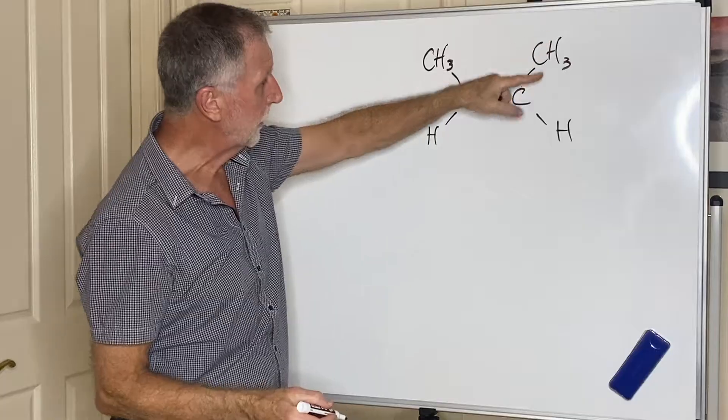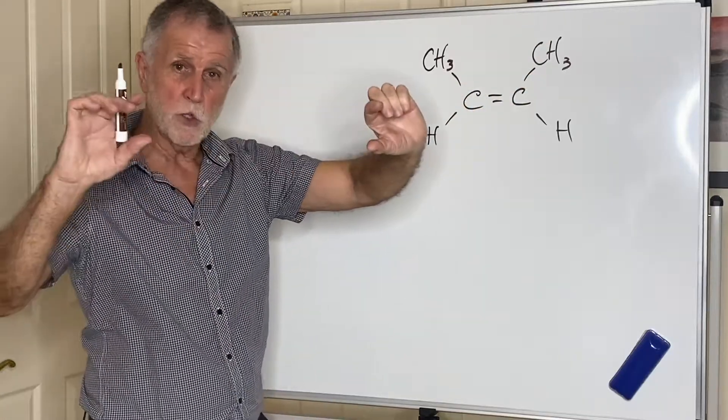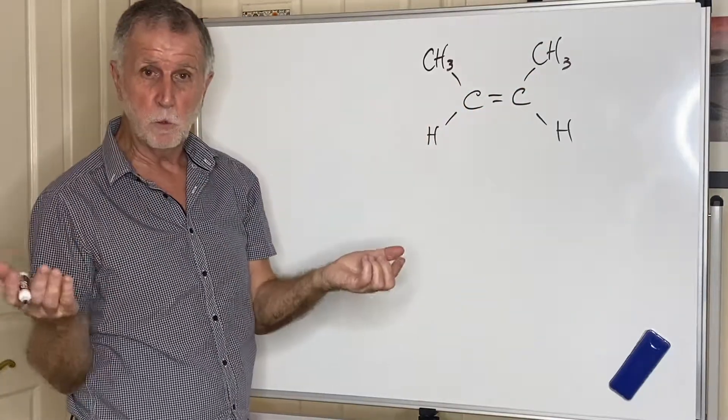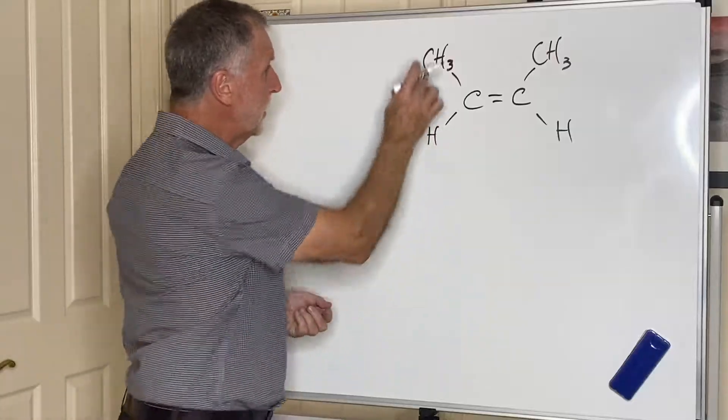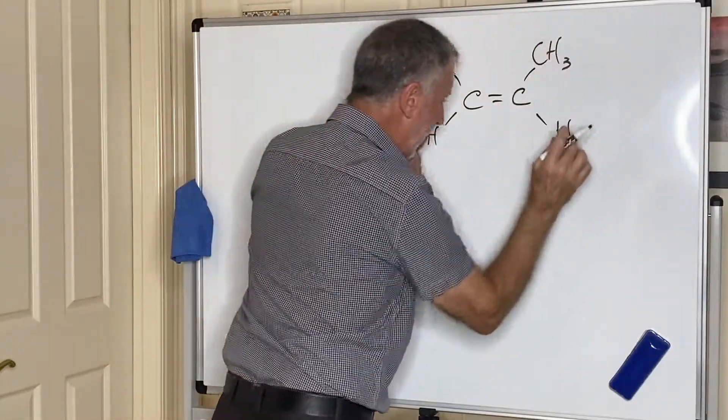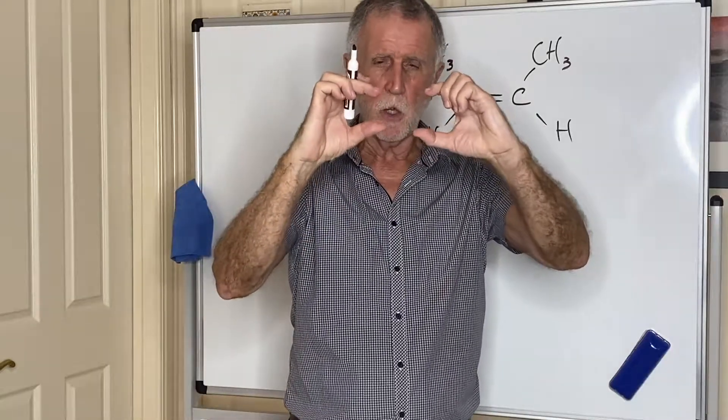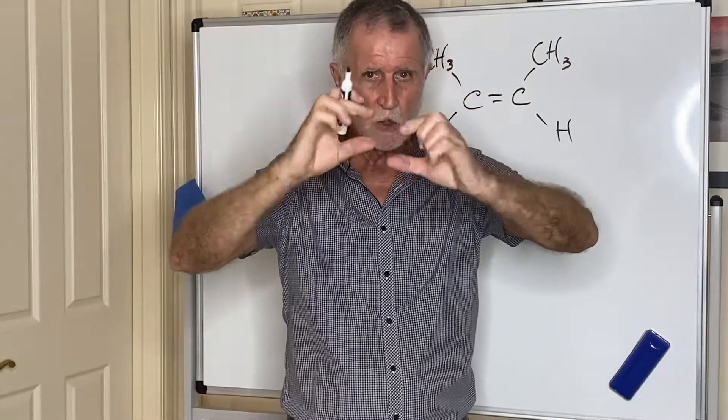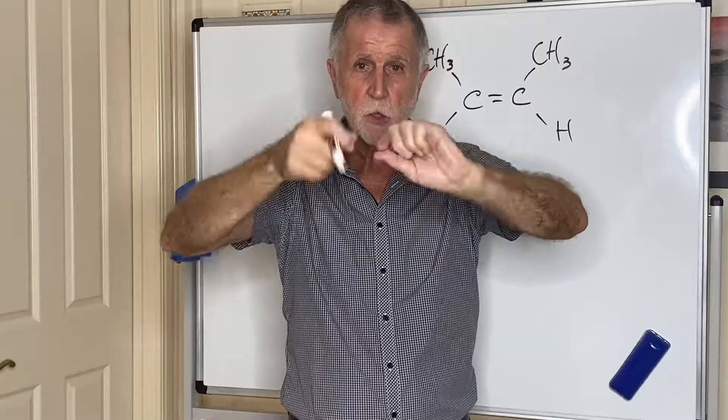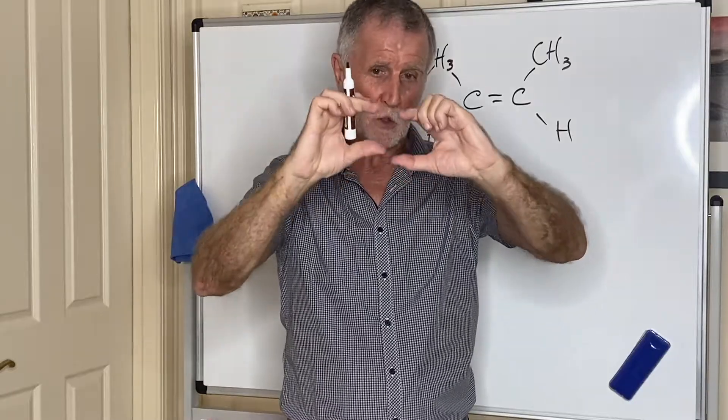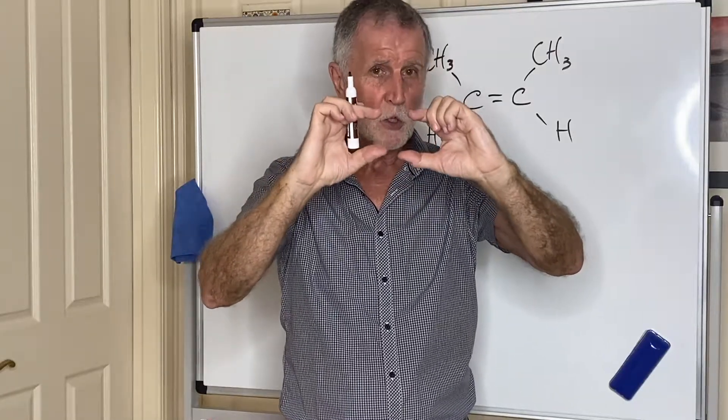Maybe it looks a bit different to when it's drawn in a straight line but hopefully you can see that. So this is but-2-ene. Now because the double bond holds those two carbons rigidly, you can't twist a double bond. Single bonds you can twist them, but double bonds hold the molecule very very rigidly in place.